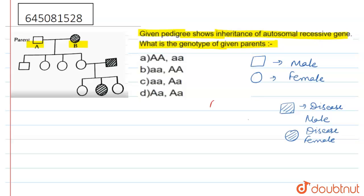Capital A capital A means this is a homozygous condition, and small a small a is also a homozygous condition. But capital A small a is not a homozygous condition — we can say that this one is a heterozygous condition.